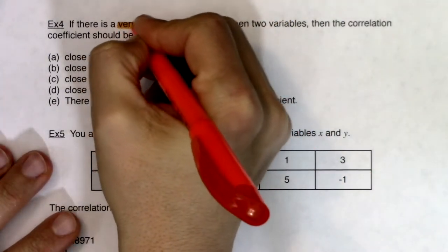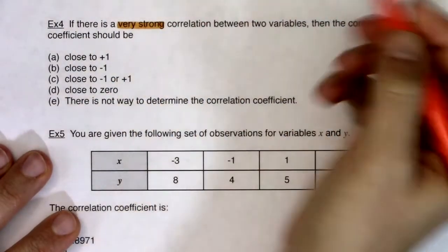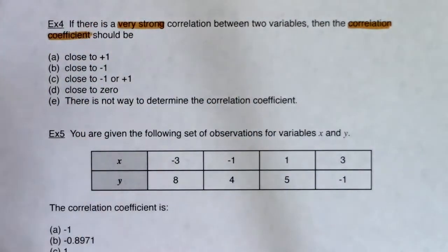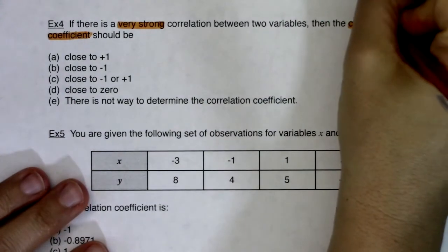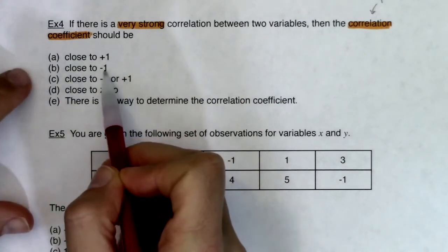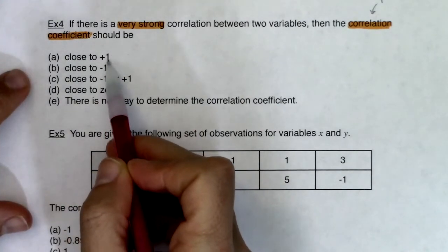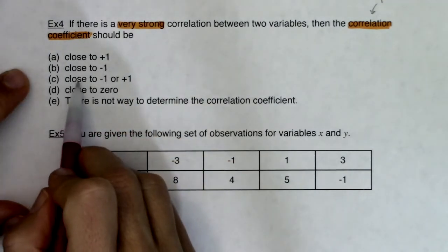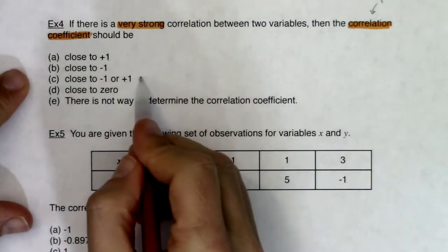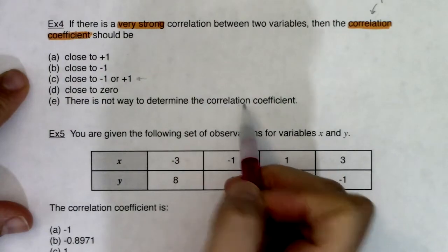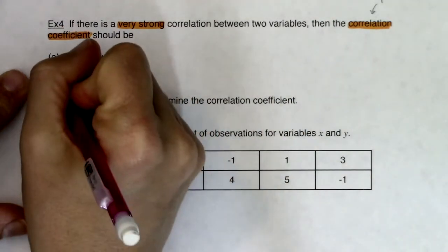It says very strong, and we're looking for the correlation coefficient, which is the r value. A strong r value is close to positive 1 — that's true — or close to negative 1 — that's also true. These are both strong, just in opposite directions, positive and negative. So close to negative 1 or positive 1 is the better answer. Close to zero is wrong, and there's no way to determine this. So C is our answer.